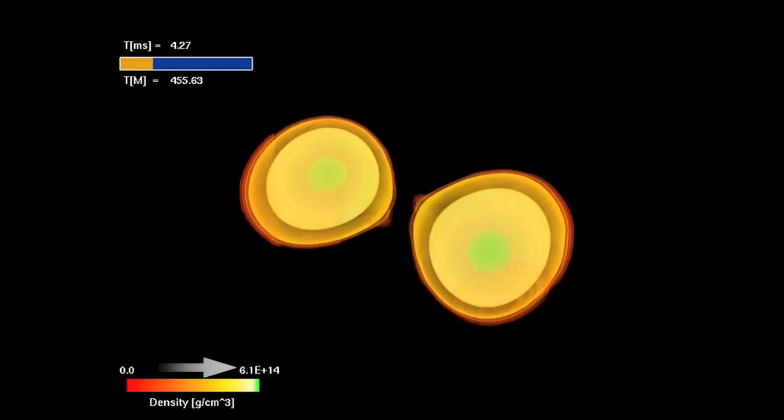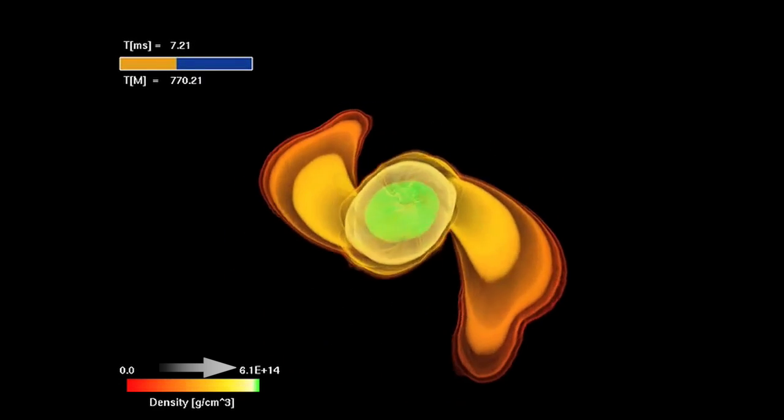Armed with state-of-the-art supercomputer models, scientists have shown that colliding neutron stars can produce the energetic jet required for a gamma ray burst.